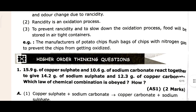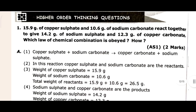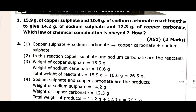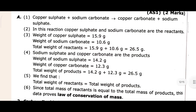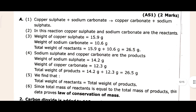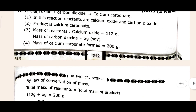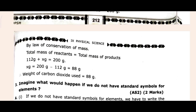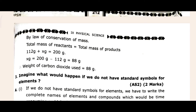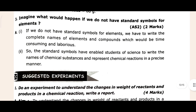Come to the Higher Thinking Question section. The first question - you can match it with your textbook if you have doubt, and this is the answer. The second question: 112 grams of carbon dioxide - actually calcium dioxide, not carbon dioxide - and 112 grams of calcium oxide. The answer follows. This is the answer by the Law of Conservation of Mass. Then come to the third question and answer.